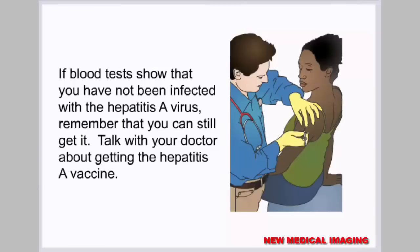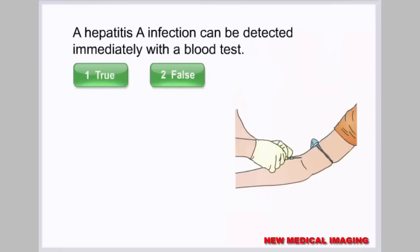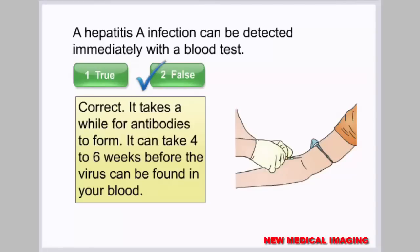If blood tests show you have not been infected, remember you can still get hepatitis A — talk with your doctor about getting the hepatitis A vaccine. Quiz review: The statement that a hepatitis A infection can be detected immediately with a blood test is false. It takes 4 to 6 weeks for antibodies to form before the virus can be found in your blood.